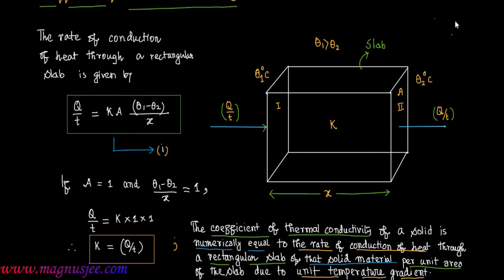The temperature gradient is (theta 1 minus theta 2) divided by x — that is, the difference in temperature divided by the thickness of the rectangular slab — and this is assumed to be unity. Due to unit temperature gradient, heat energy will be conducted, and the rate of conduction of heat through the rectangular slab per unit area is the coefficient of thermal conductivity.